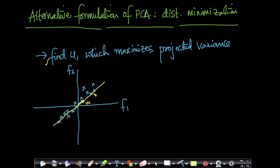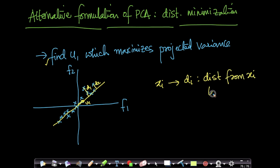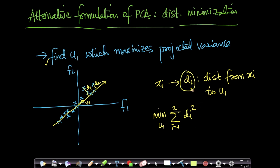There is an alternative formulation which is: I take the distance of each of these points to this line. Let us call this D1, this distance D2, and so on. For each point Xi, I can get Di which is the distance from Xi to U1. In the distance minimization formulation, we write the optimization problem as follows: we want to find U1 which minimizes the sum of these distances squared. We will explain what Di is in terms of U and Xi in a moment.